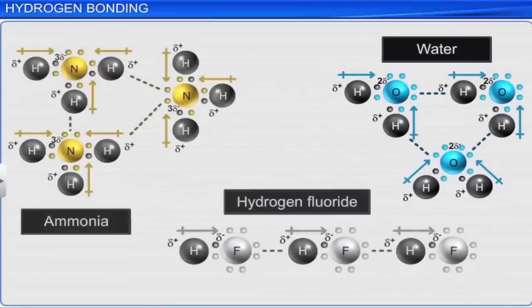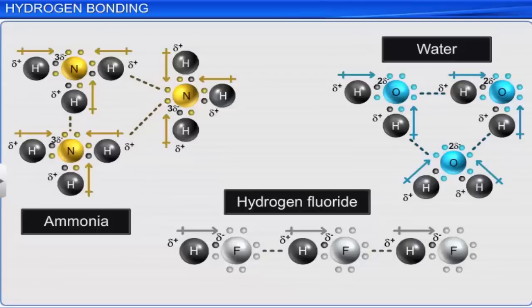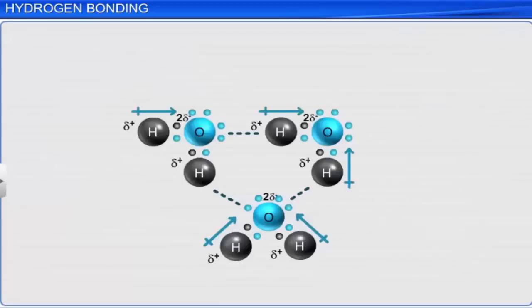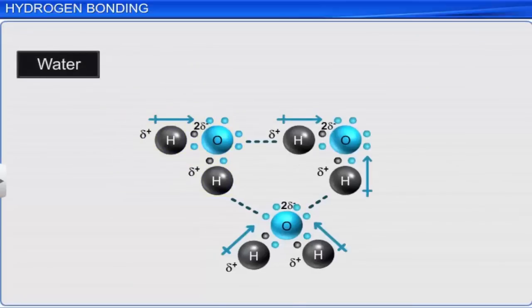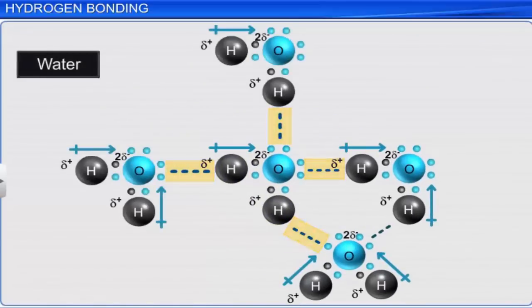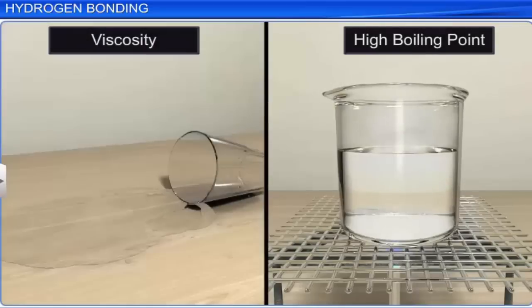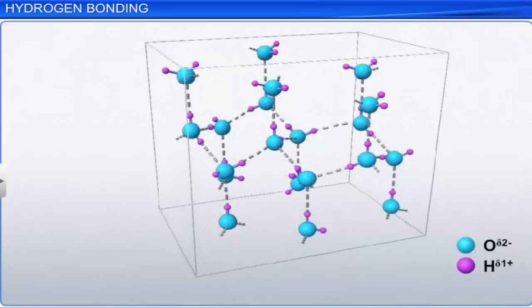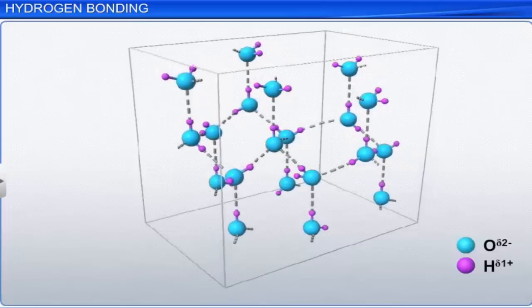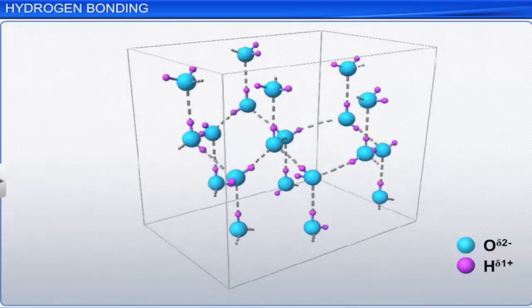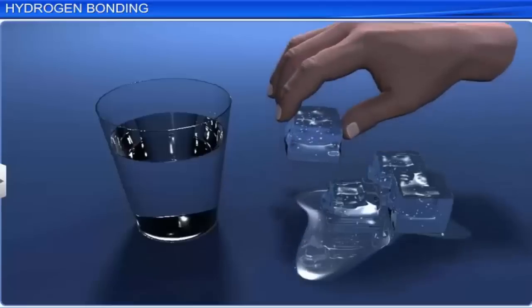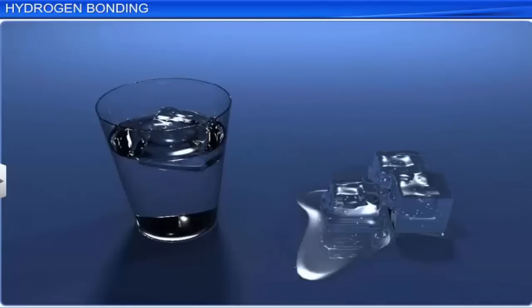Hydrogen bonds affect the structure and properties of a compound. For example, in water, each molecule can form four hydrogen bonds, giving it viscosity and a high boiling point. In ice, the hydrogen bonds create an open hexagonal lattice crystal structure, reducing the density of ice compared to water at the same temperature — this is why ice floats on water. Hydrogen bonds are strongest when the compound is in the solid state, and weakest or absent in the gaseous state.